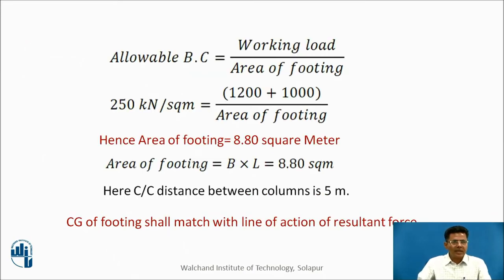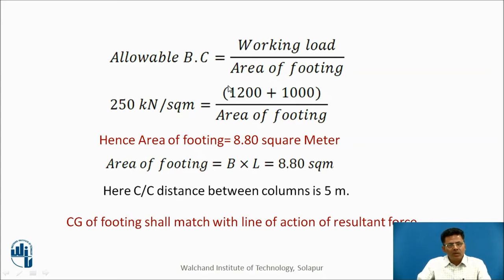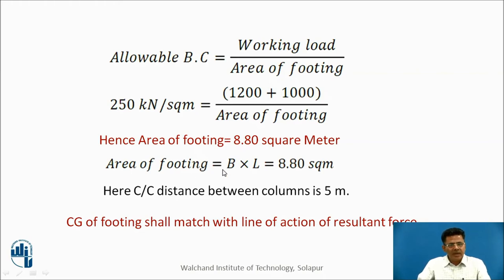Let us go for calculations. The allowable bearing capacity of 250 kN/m² should not be crossed, and accordingly we need to provide the area of footing. Working load divided by area of footing equals allowable bearing capacity. Working load is 1200 + 1000 = 2200 kN and allowable bearing capacity is 250 kN/m². Solving this, we get the required area of footing as 8.80 m². Since the footing is rectangular, area = breadth × length = 8.80 m².